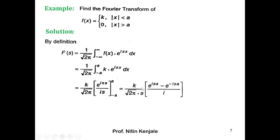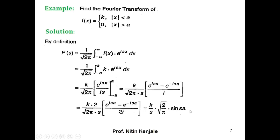Now we multiply and divide by 2, so that outside we have 2k upon root 2π into s, and inside the bracket we have e raised to isa minus e raised to minus isa upon 2i — but this is nothing but the exponential representation of sin(sa). So we replace this bracket by sin(sa). Therefore the Fourier transform F of s is given by k by s into root 2 by π into sin(sa).